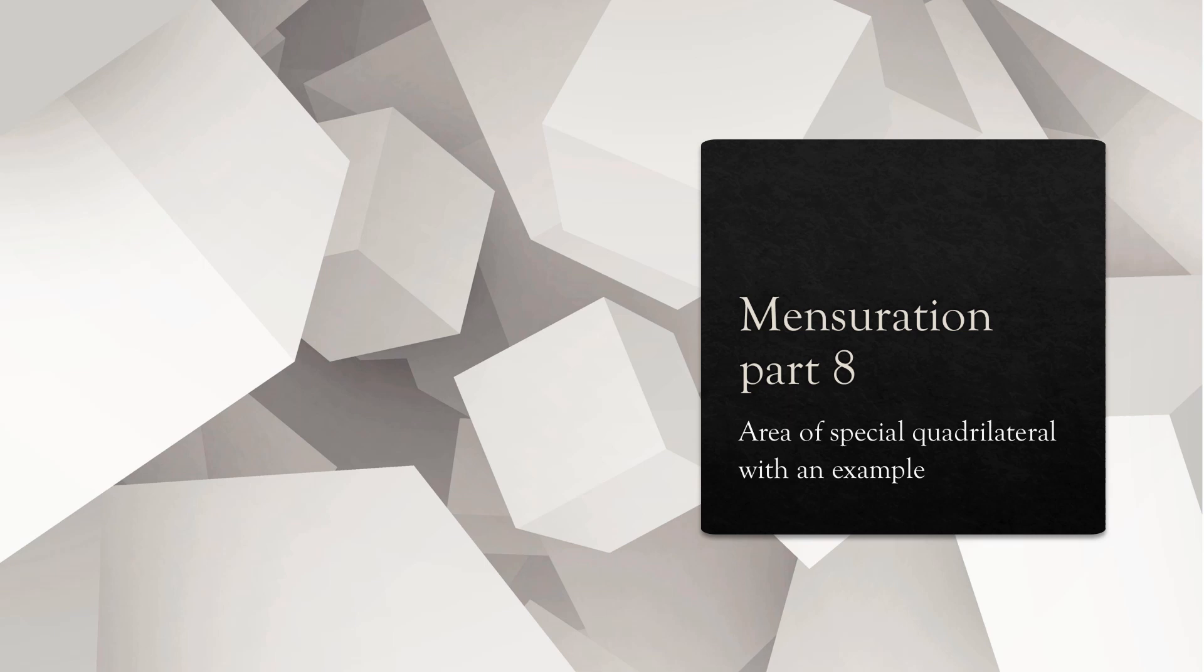Hello students, now in this session we are going to speak about mensuration part 8, area of special quadrilaterals with an example. Special quadrilateral means rhombus. Let's begin.